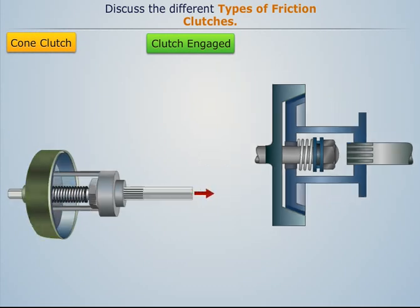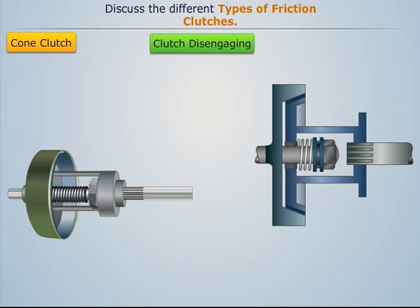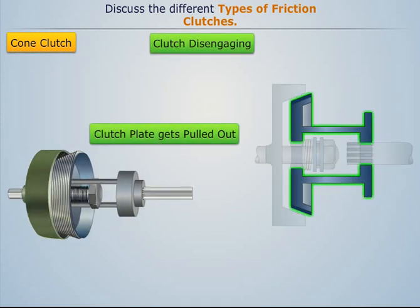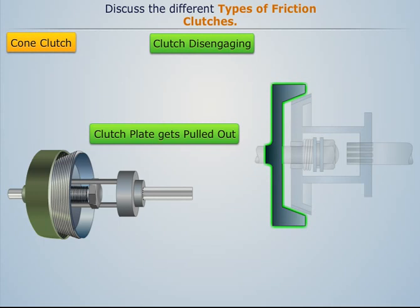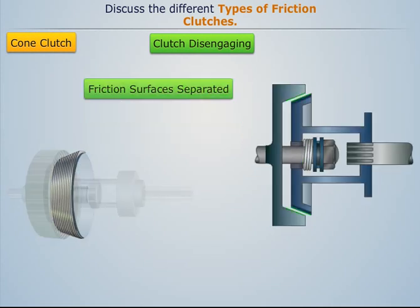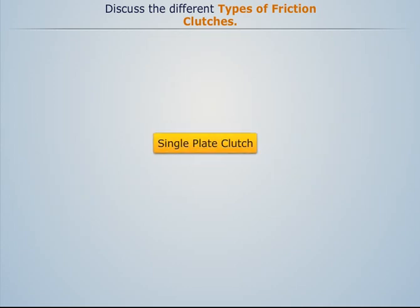For disengaging the cone clutch, the clutch pedal is pressed, which pulls the clutch plate out of the flywheel against the force of a spring, thereby separating the contact surfaces.